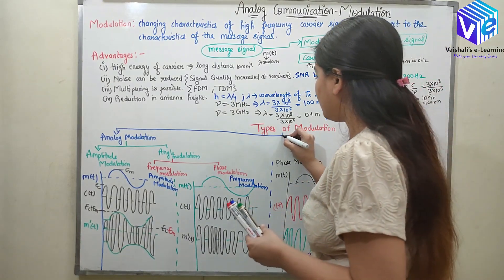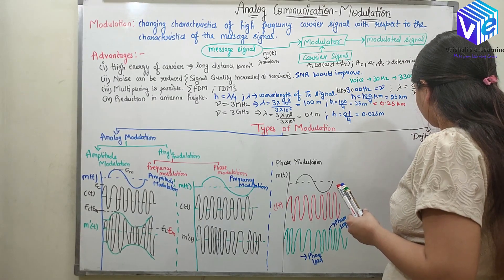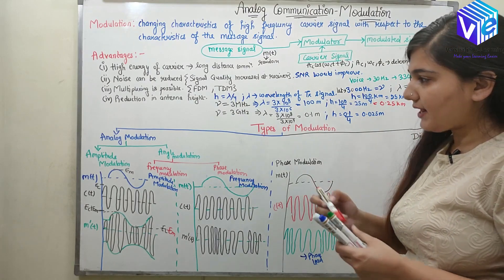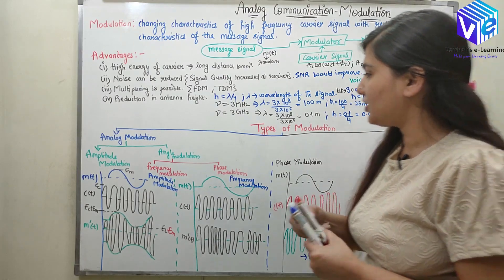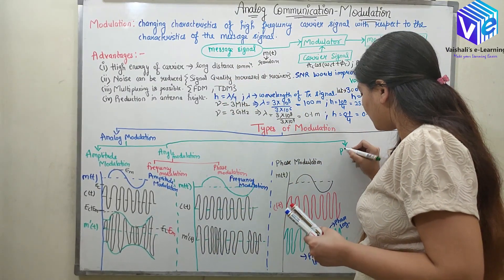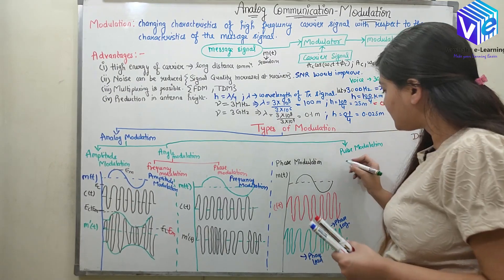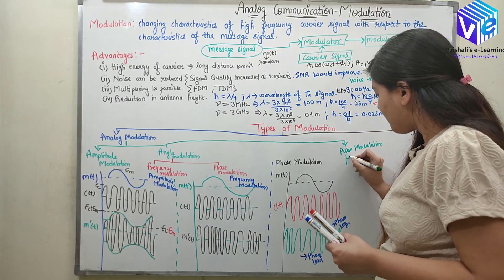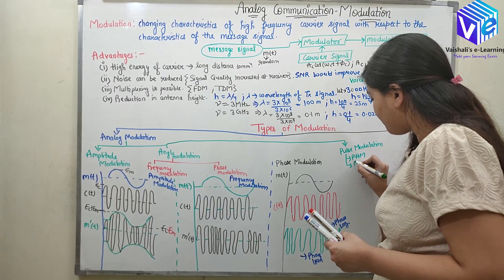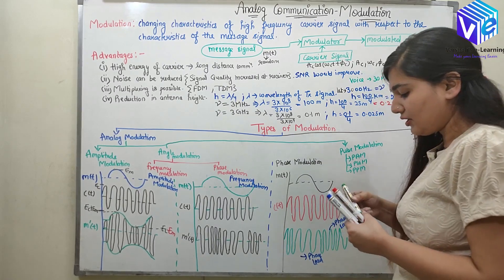Now coming to the second type — in analog modulation we have pulse analog modulation as well. In pulse modulation we have: pulse amplitude modulation, pulse width modulation, and pulse position modulation.